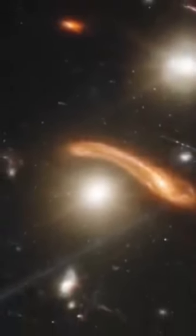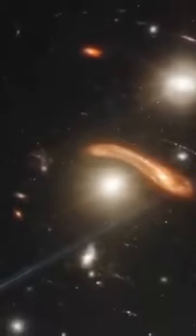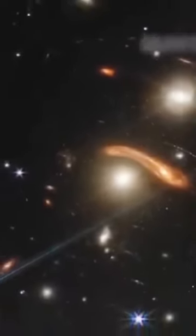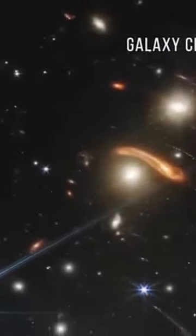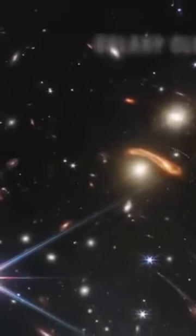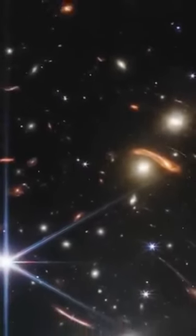The first image from the James Webb Telescope was unveiled on July 12, 2022. It is a photograph of the galaxy cluster SMACS 0723 as it was 4.6 billion years ago.